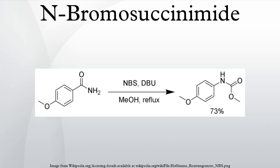Allylic and benzylic bromination: Standard conditions for using NBS in allylic and/or benzylic bromination involve refluxing a solution of NBS in anhydrous CCl4 with a radical initiator, usually azobisisobutyronitrile (AIBN) or benzoyl peroxide, irradiation, or both to effect radical initiation.